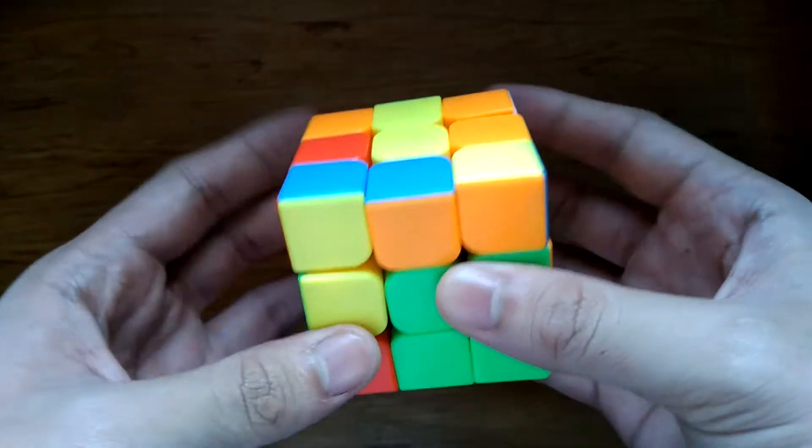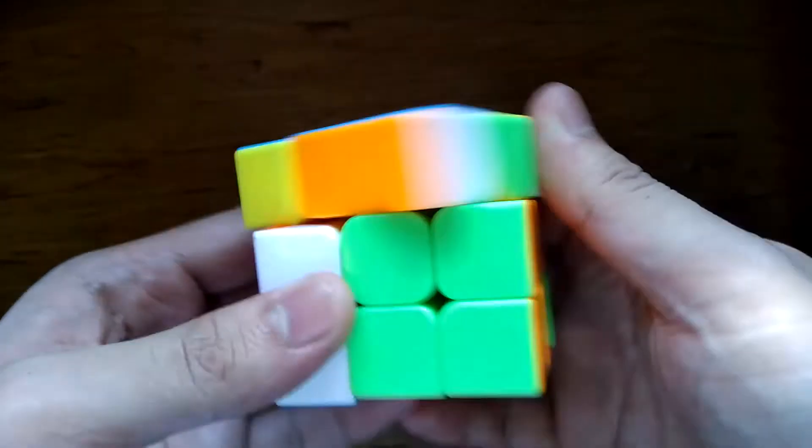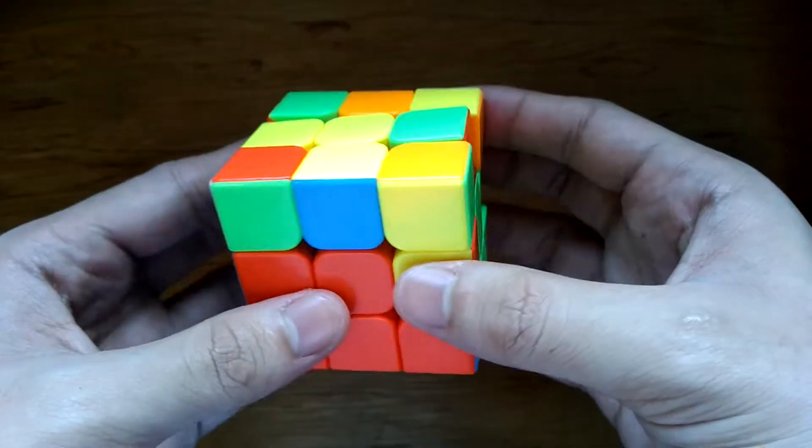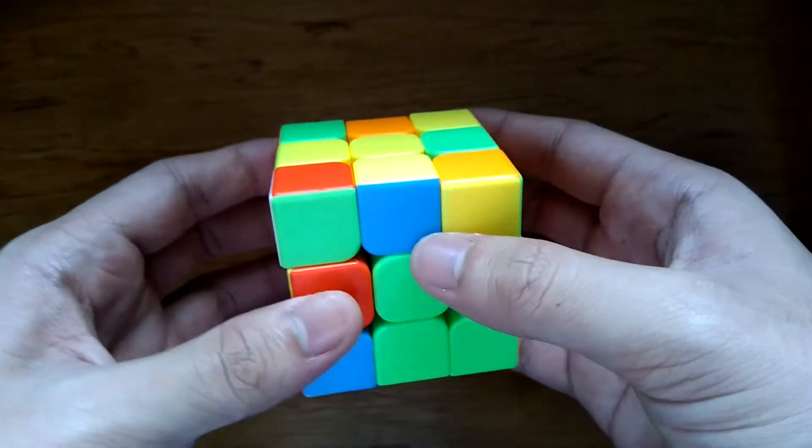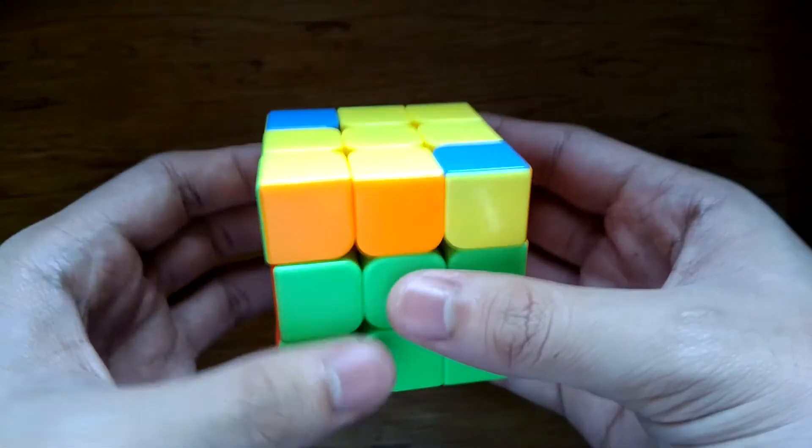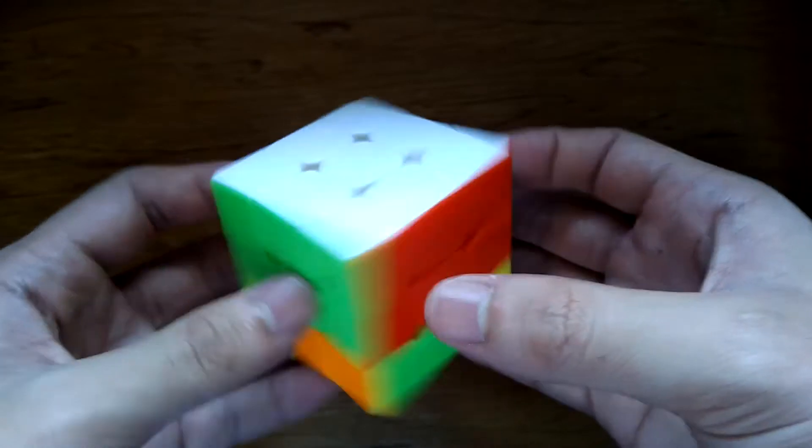In F2L, corner and edge pieces are paired up and later moved to their correct location. There are 42 standard cases for each corner edge pair, including the case where it is already solved. It can also be done intuitively.